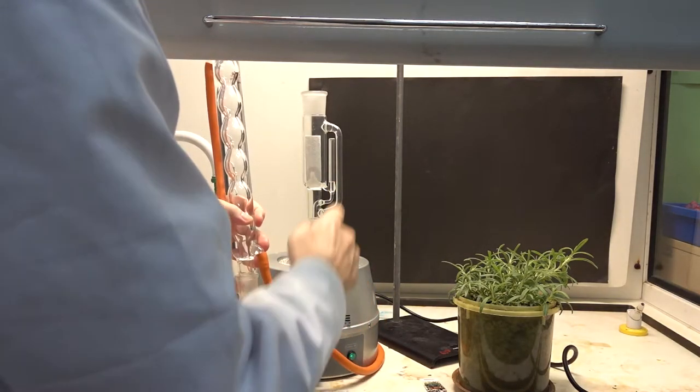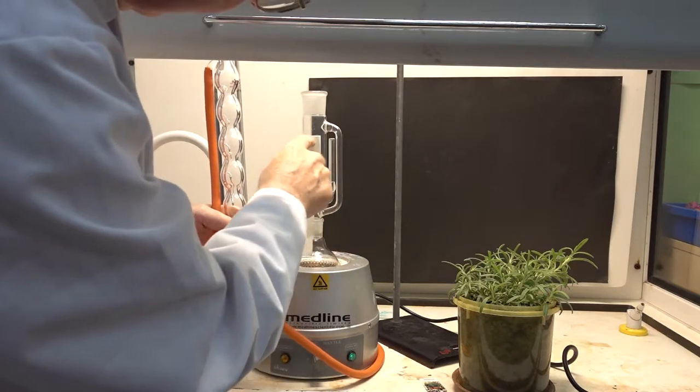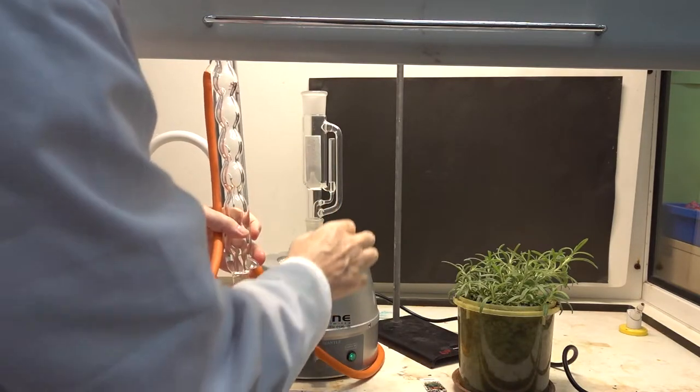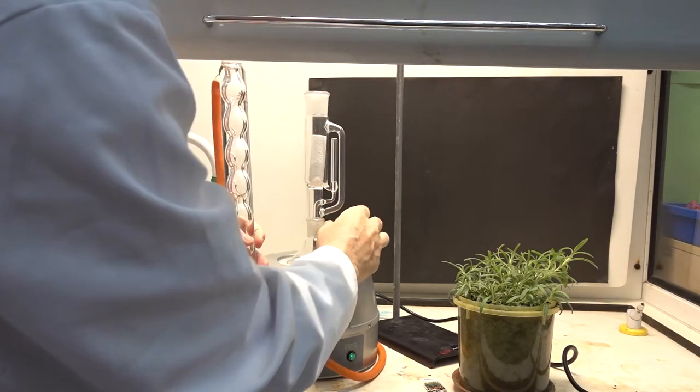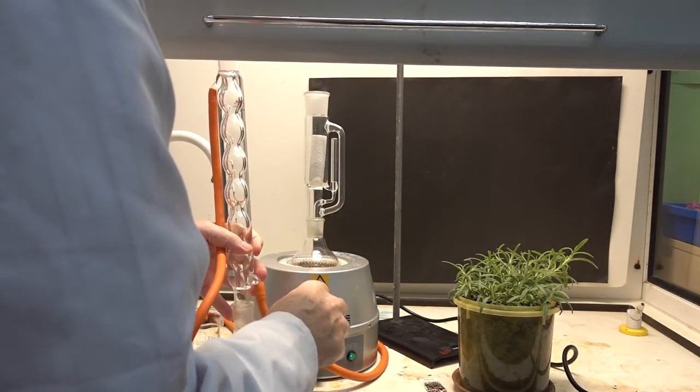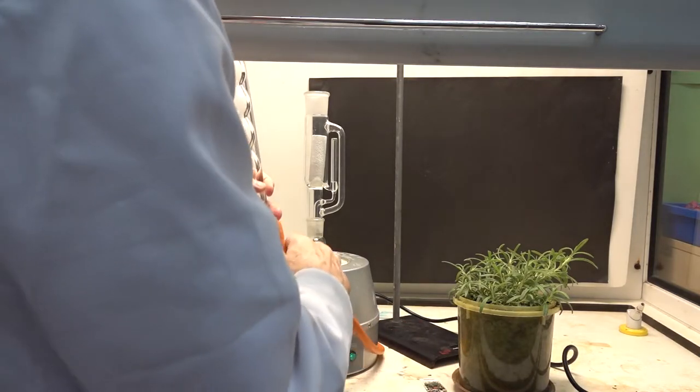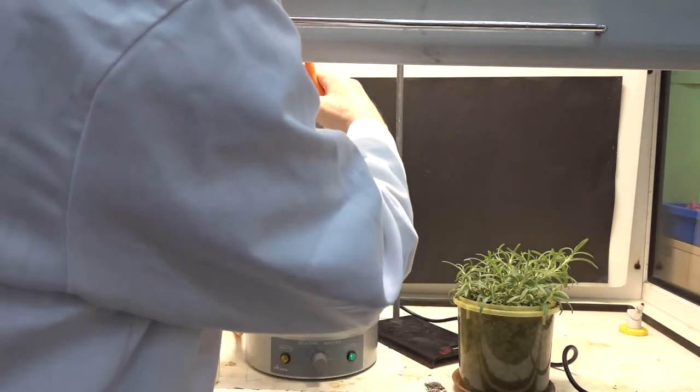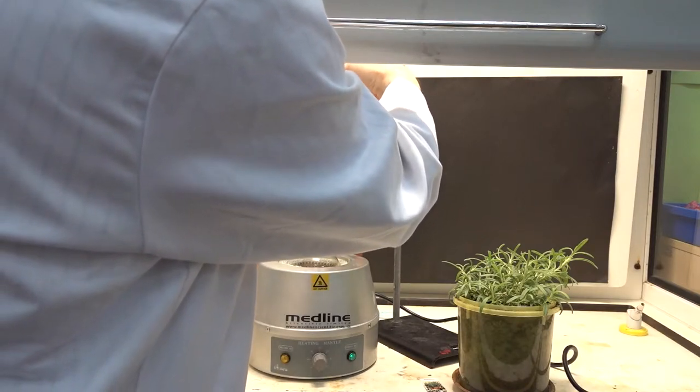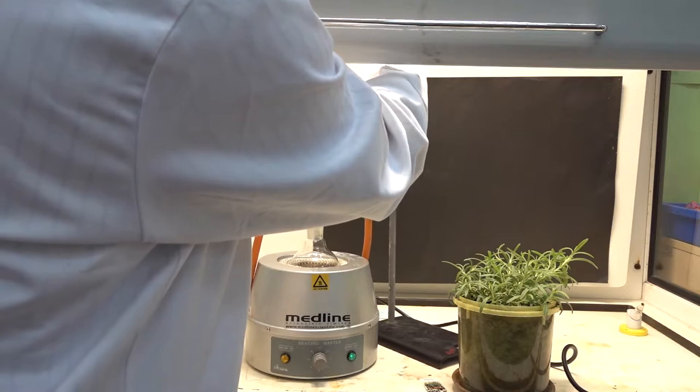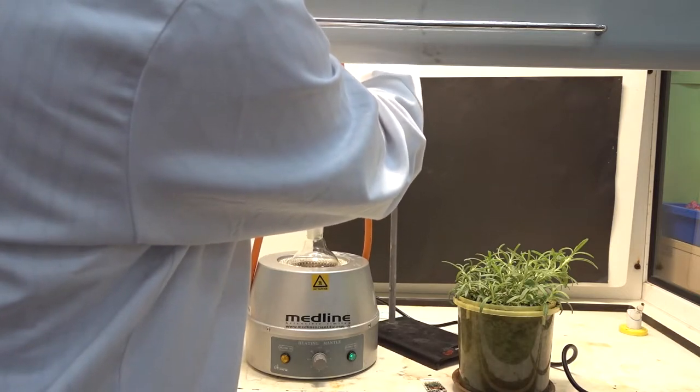We're using ethanol. The volume here required to pass over is about 60, 65 to 70 mils. We've already got 65 to 70 mils in the flask, and we'll be adding another 65 mils or 70 mils again, so we've got double the volume required by the apparatus.